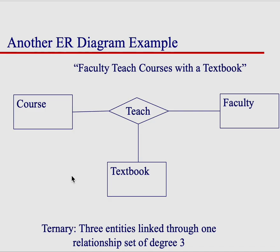This example is also ternary, where we have three entities and a teach relationship. This is a ternary example where we have three entities: course, textbook, and faculty, and we have a relationship called teach.